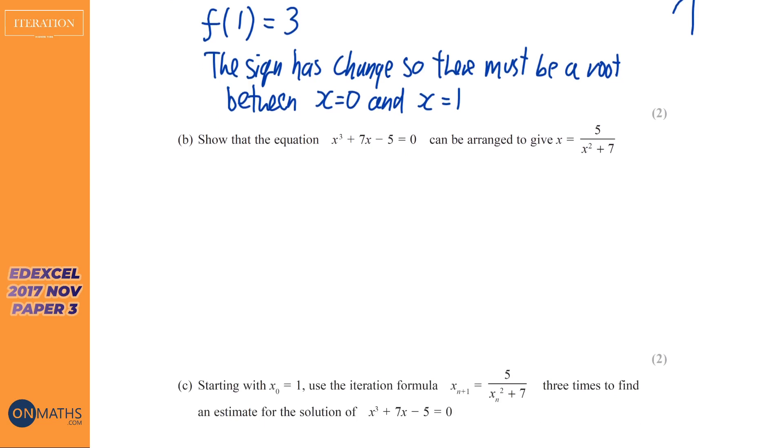This next one's just a rearranging one, and this is actually really typical for the iterative formula, is sometimes you'll have to come up with it yourself, but it will specify what it is, which it does here. And you just need to show how they've got there. So you won't, I don't think you'll ever have to come up with it yourself, but you'll have to show how they came up with it, if that makes sense. So quite a lot to do here. So we know what we're aiming for. We're aiming for one of the x's to be on the left, and then the x squared to be at the bottom. So the obvious first thing to do with this is add five both sides, because we've got that five at the top of the fraction.